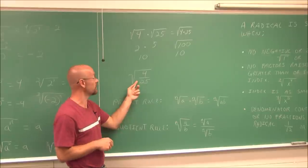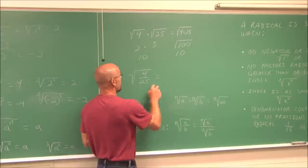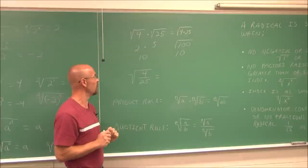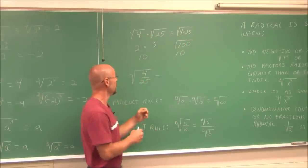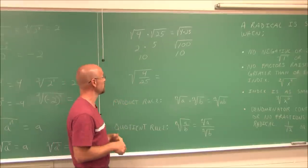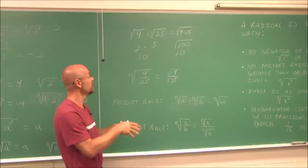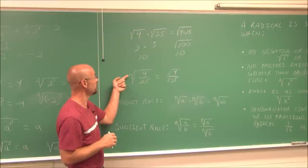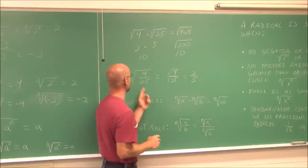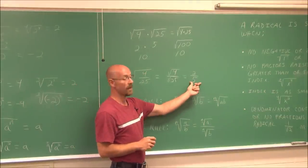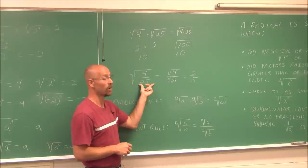For division: here I have the square root of 4/25. I identify 4 and 25 as perfect squares. Using the quotient rule, I can split the fraction under the radical into separate numerator and denominator radicals: the square root of 4 divided by the square root of 25 equals 2/5. I can check by squaring: 2/5 times 2/5 is 4/25.